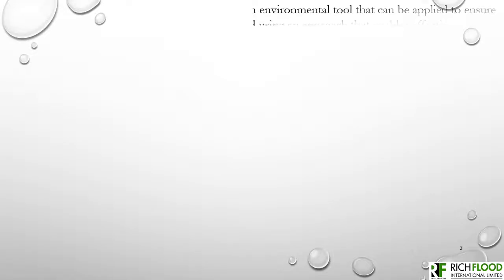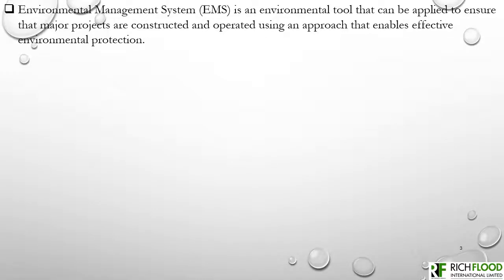What do we mean by EMS? EMS is an abbreviation for Environmental Management System. This is an environmental tool that can be applied to ensure that major projects are constructed and operated using an approach that enables effective environmental protection. EMS provides a systematic way of managing an organization's environmental affairs within the aspects of the organization's overall management structure.